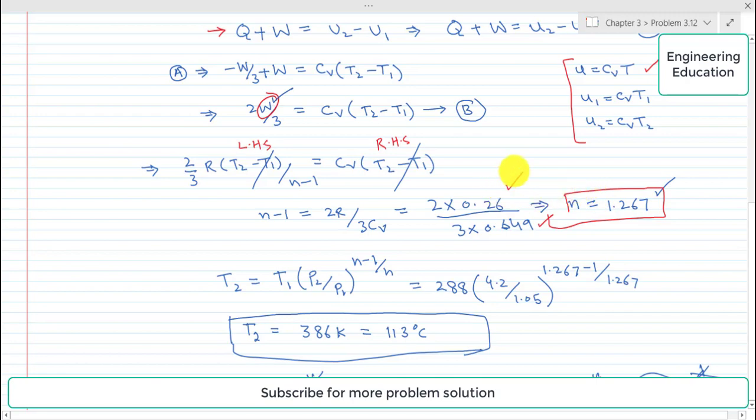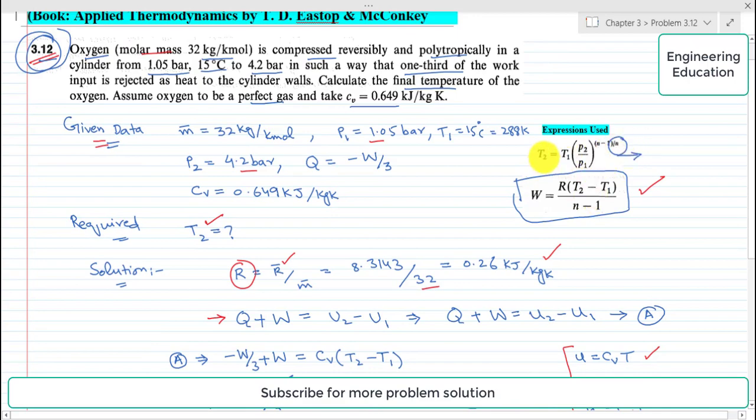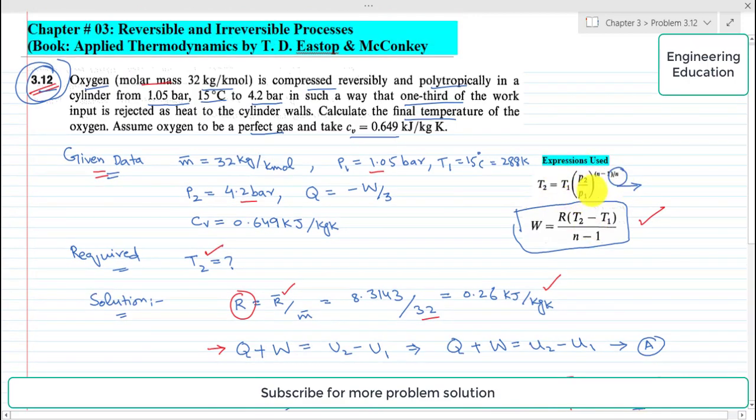Now using the expression for temperature, this temperature ratio and pressure ratio are linked with each other. And if we are interested to find T2 or the final temperature after compression for polytropic process, for that we can write that T2 is equal to T1 into P2 by P1 power n minus 1 over n.